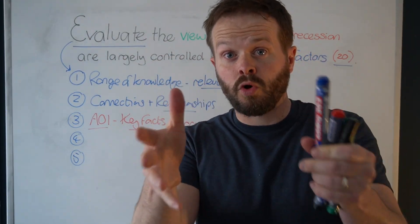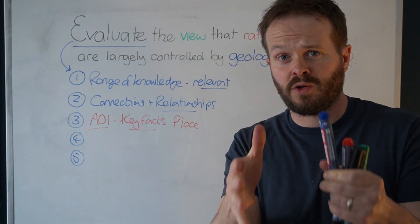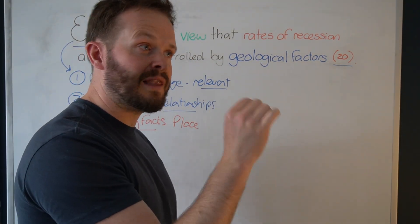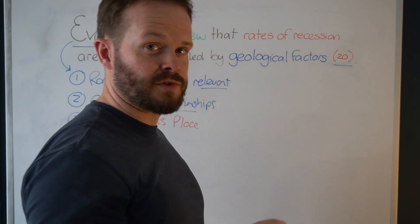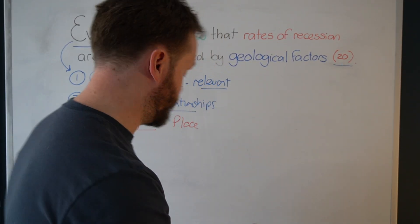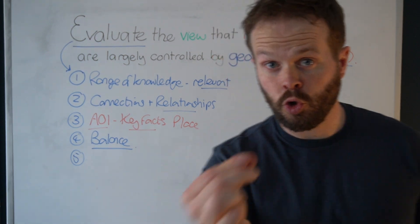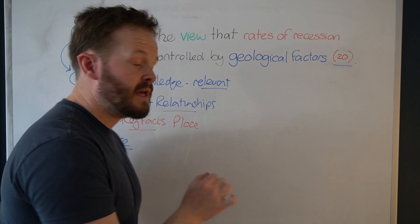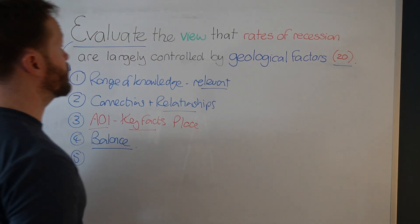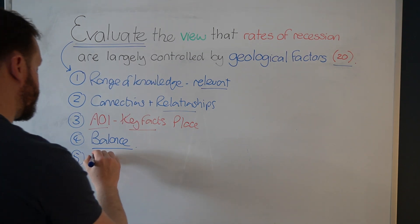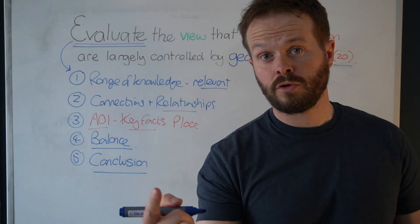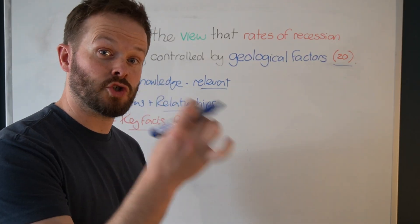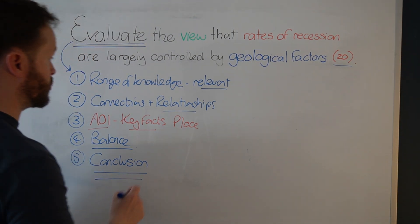Number four — the most important thing for you to do in your evaluate questions. If you don't do this, you will consistently hit level one or low level two. You must balance your response. Give two sides of the argument. If you're not giving two sides of the argument, you can't show elements of evaluation. And then finally, if you want to be hitting top level four or top level three, you need a conclusion — that's a justified judgment. That's what your conclusion is.